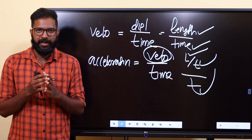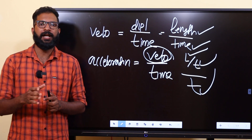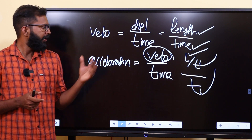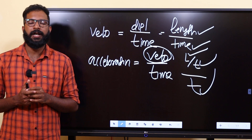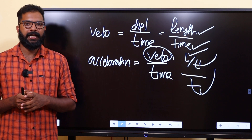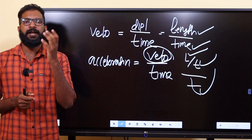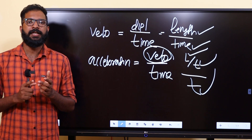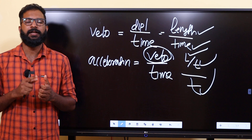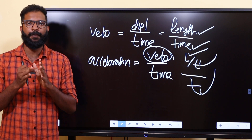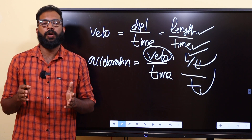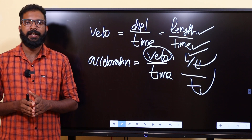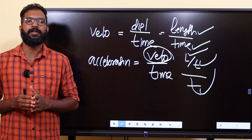To summarize: fundamental quantities are basic physical quantities. Derived quantities are expressed in terms of fundamental quantities. The fundamental quantities are mass, length, time, temperature, electric current, luminous intensity, and amount of substance. The derived quantities include velocity, acceleration, momentum, force, work, and torque.